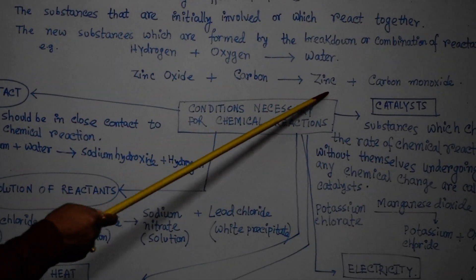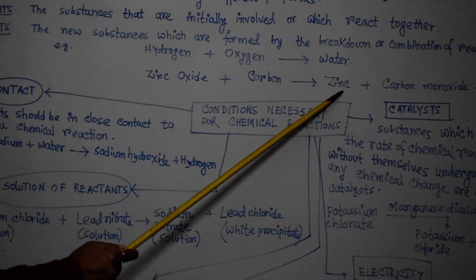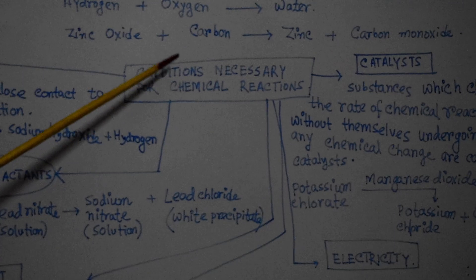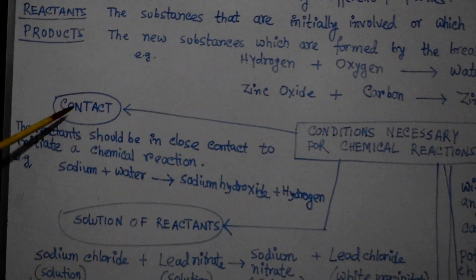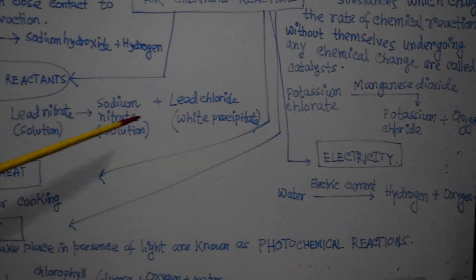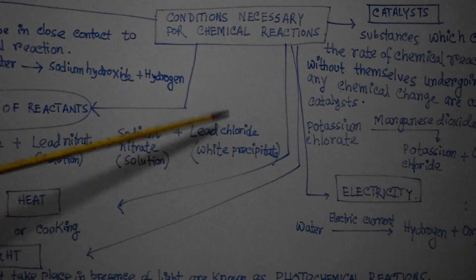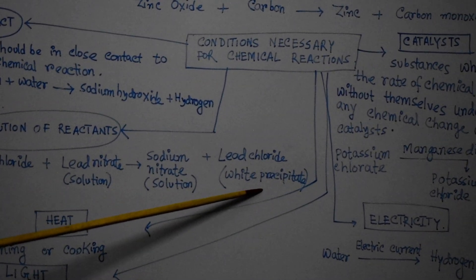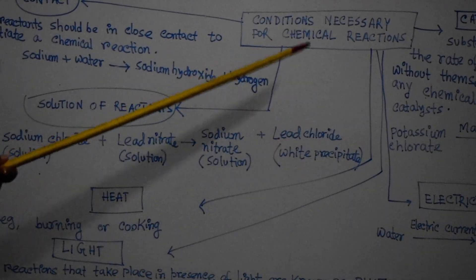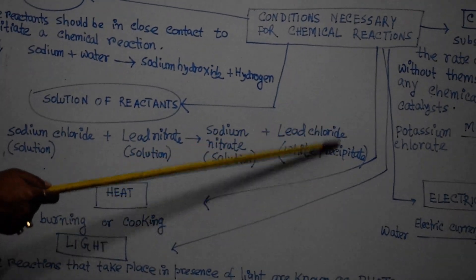Zinc oxide reacts with carbon to form zinc and carbon monoxide — carbon combines with oxygen to produce carbon monoxide while zinc oxide breaks down to produce zinc, showing products formed by breakdown or combination of reactants. We also discussed the six conditions: contact, solutions of reactants, heat, light, catalyst, and electricity. A new term is precipitate — the insoluble solid formed when two solutions react. Lead chloride, formed when sodium chloride solution reacts with lead nitrate solution, is an insoluble white precipitate.